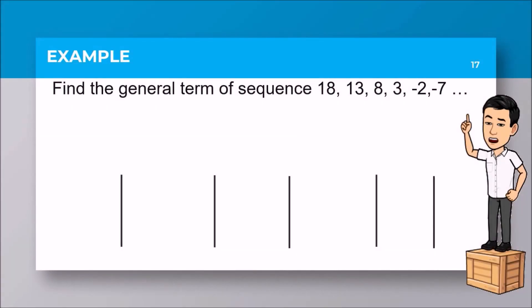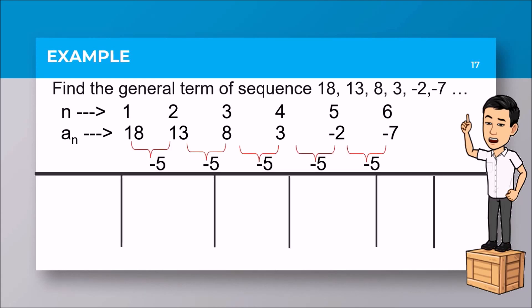Next example. Find the general term of the sequence 18, 13, 8, 3, negative 2, negative 7, and so on. From before, we always start with n equals 1, 2, 3, 4, 5, and 6. Expecting a sub n equals 18, 13, 8, 3, negative 2, and negative 7. Observing our a sub n, from 18 going to 13, or 13 going to 8, we actually have negative 5 being added to the previous term.